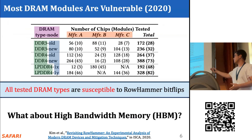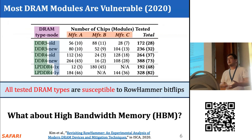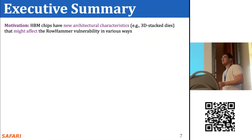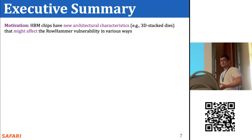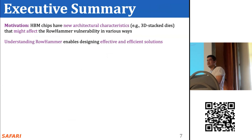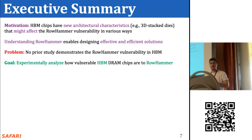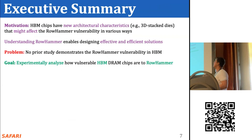Considering these recent developments in RowHammer, we asked the question: what about high-bandwidth memory? Are high-bandwidth memory chips vulnerable to RowHammer, and if so, how does the vulnerability look in these chips? These chips harbor new architectural characteristics that might affect the RowHammer vulnerability in different ways. Understanding RowHammer will enable us to develop more efficient and effective solutions. This study demonstrates the RowHammer vulnerability in high-bandwidth memory, and our goal is to experimentally analyze how vulnerable these chips are.